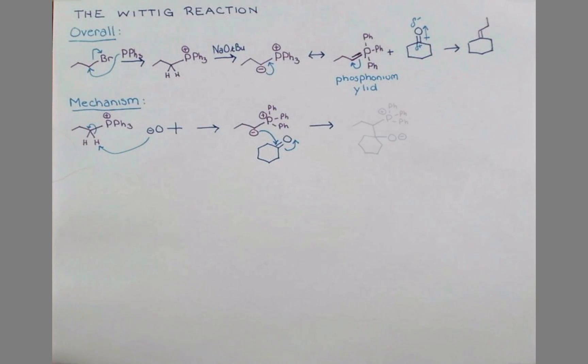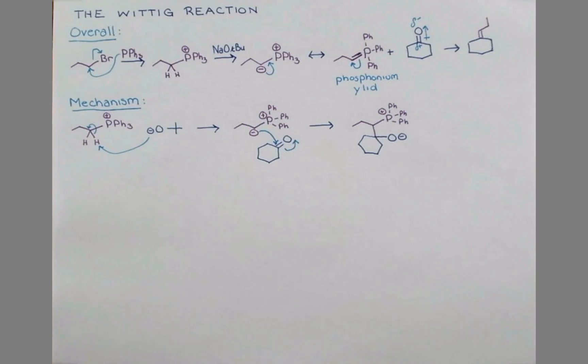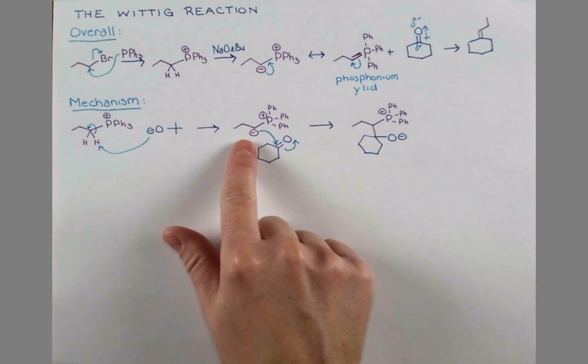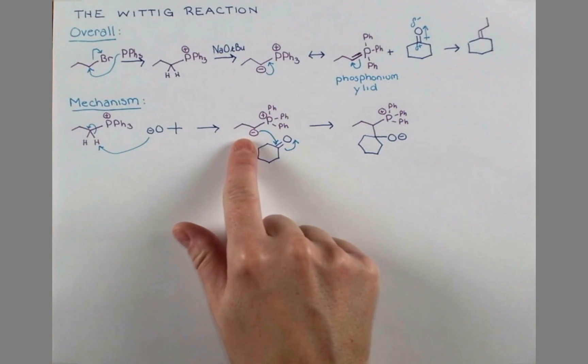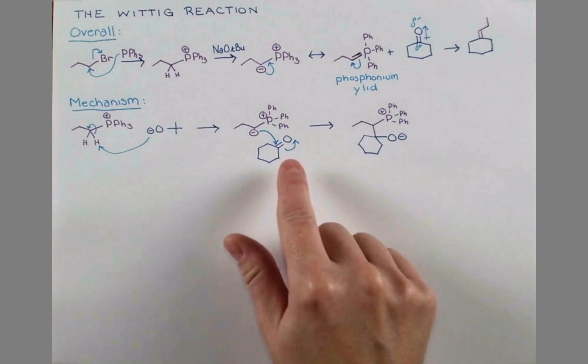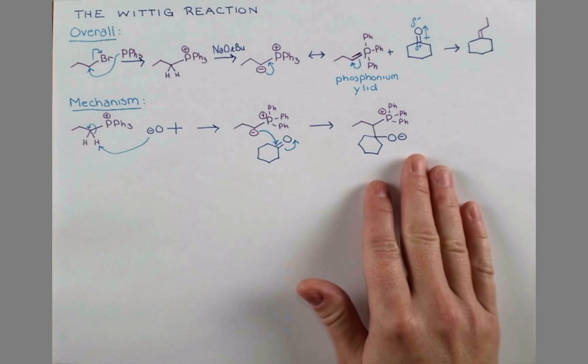This attack step gives this. I want to point out, even though this mechanism looks really new because you have elements that maybe you haven't seen before, this attack is similar to a Grignard attacking a carbonyl. So we just have this negative carbon attacking at the carbonyl carbon and pushing the electrons up. Now we have something kind of unique.